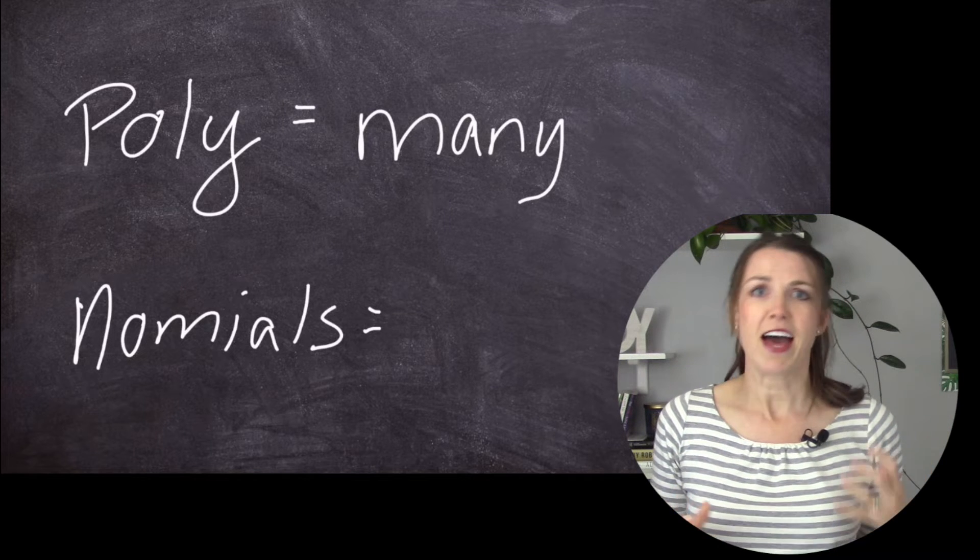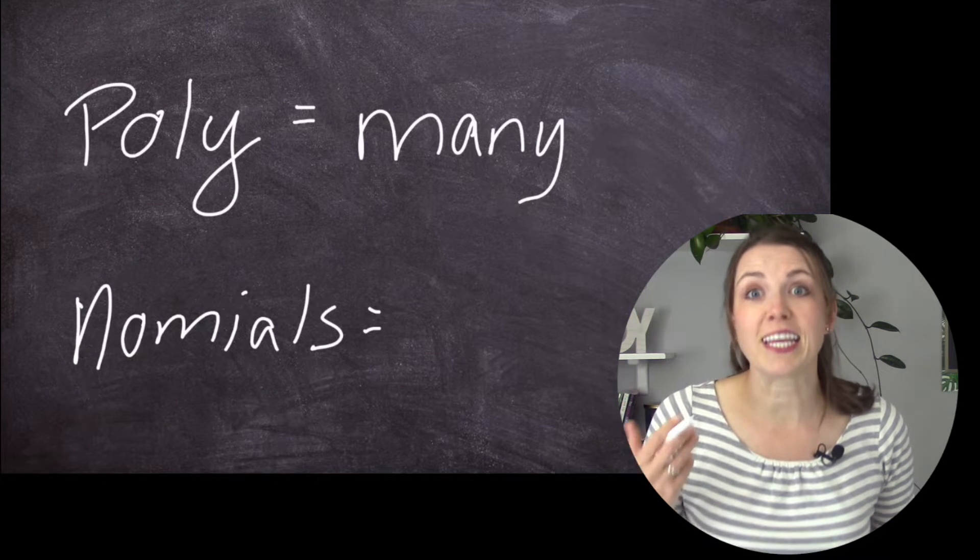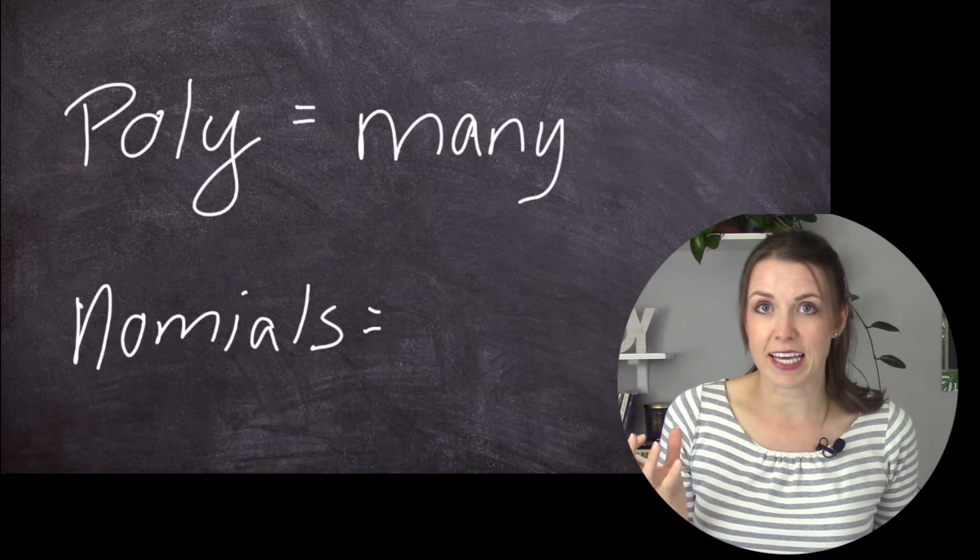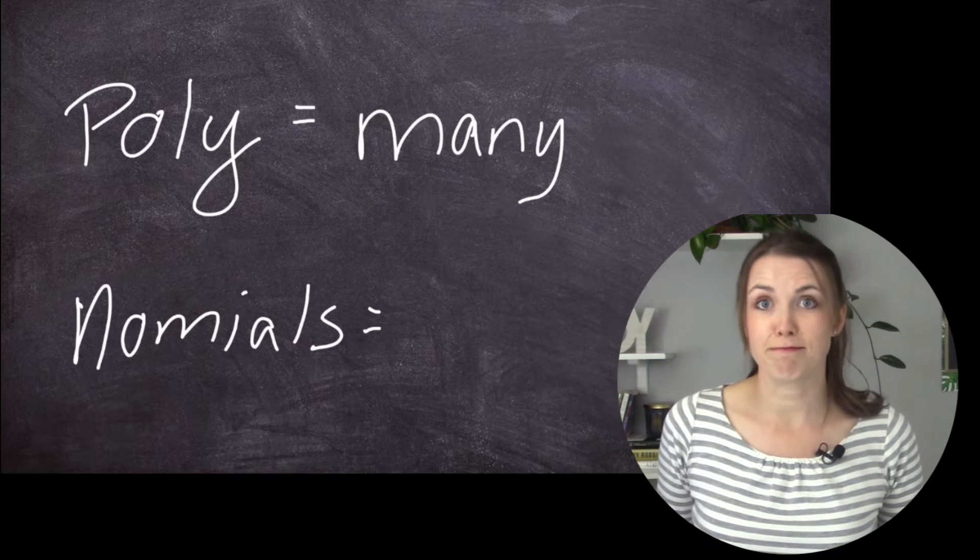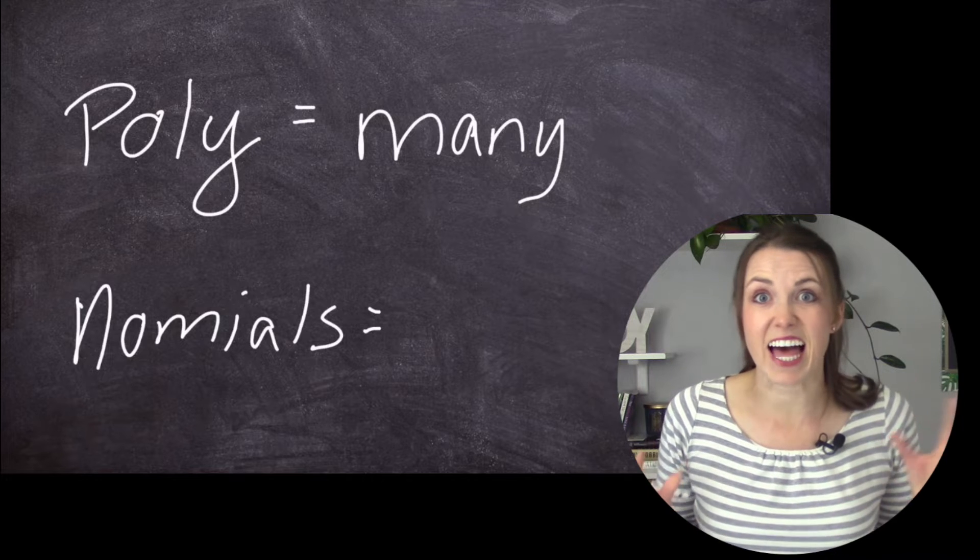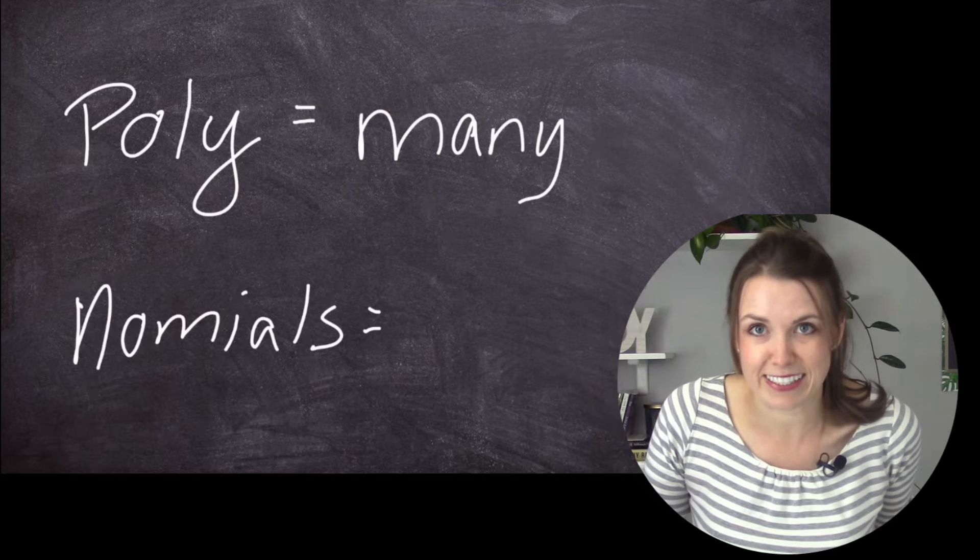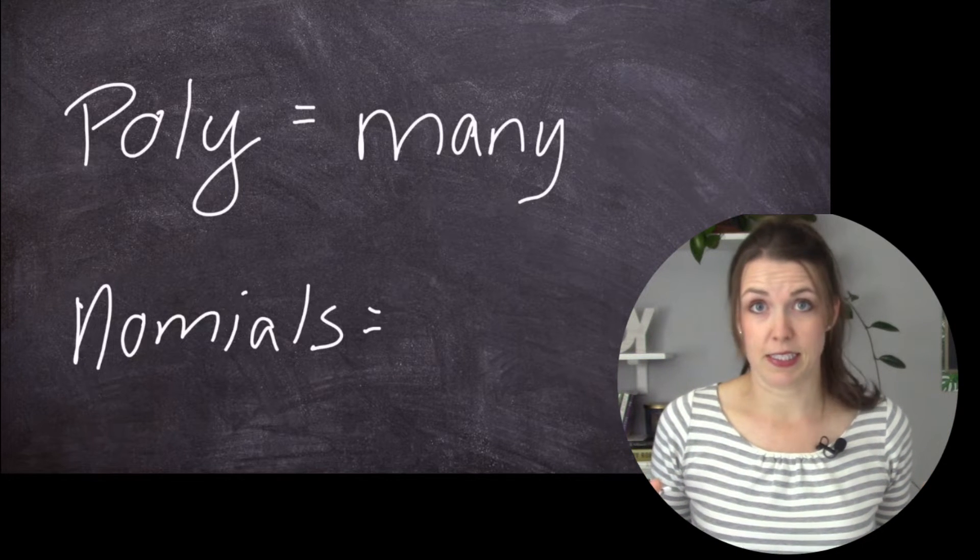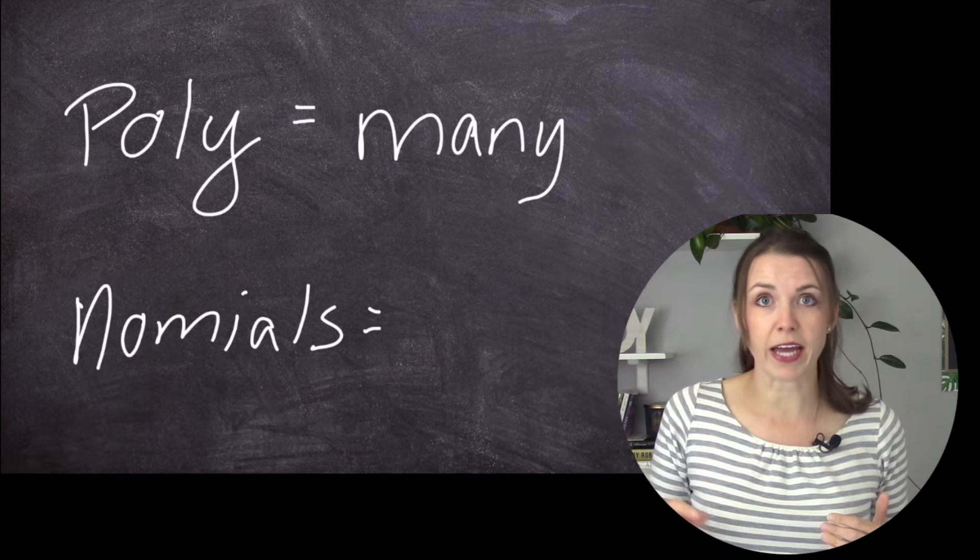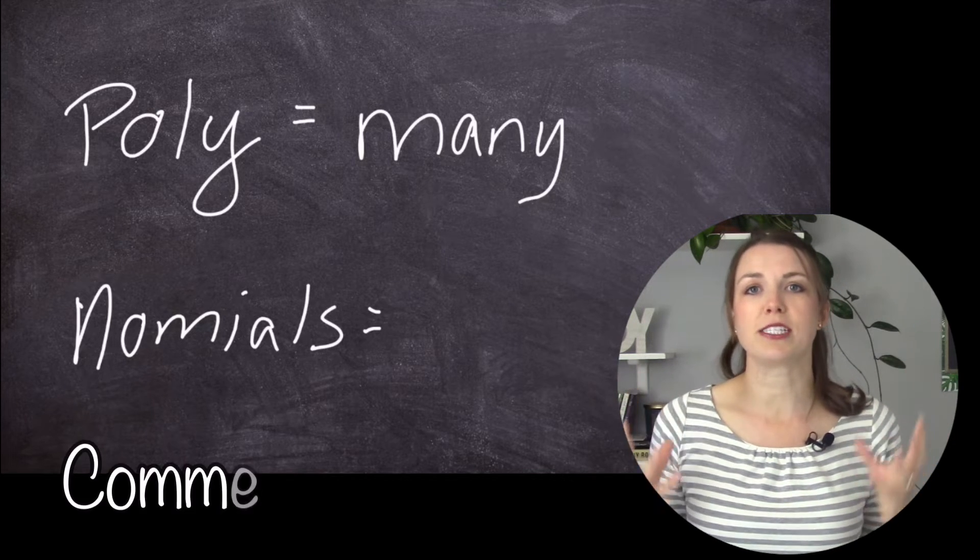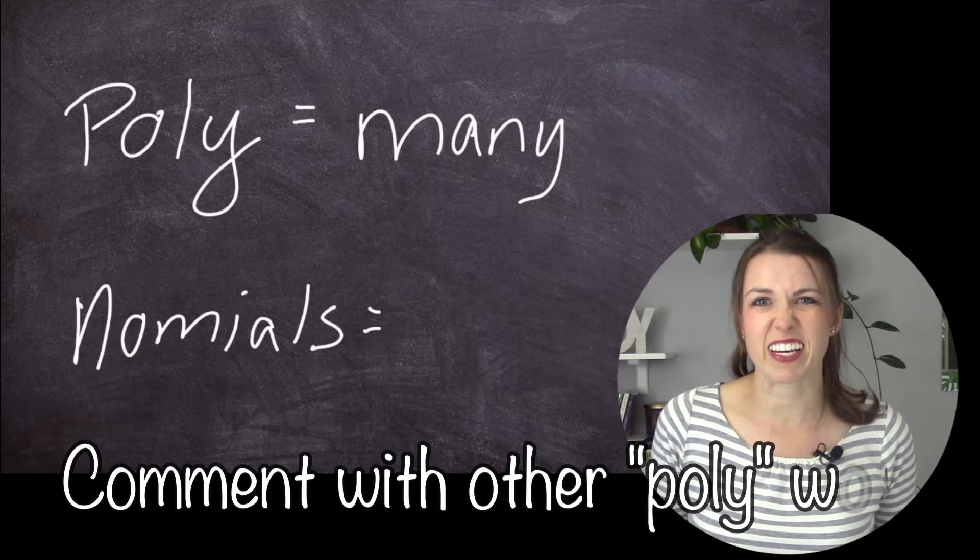So think about some other words that you've heard that have the word poly in it. Polynesia, right? Polynesia is a group of islands in Asia. Polygraph, right? That's the lie detector. Does that mean it detects many lies? Let's hope not. Polygamist, right? A polygamist is someone that has many wives. So again, poly just means many. Comment below and tell me if you can think of any other poly words.